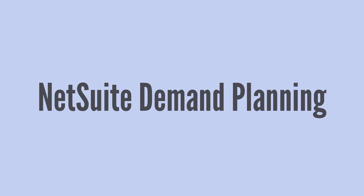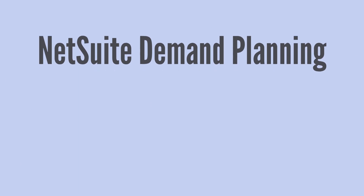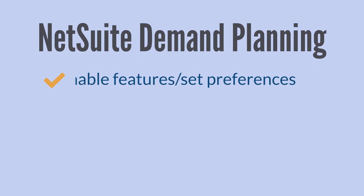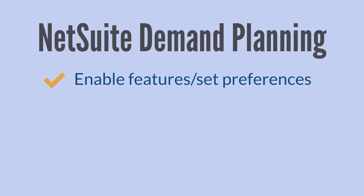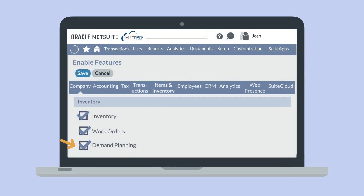As with most NetSuite functionality, setting up demand planning requires enabling some features and setting some preferences. In Enable Features, you can find the Demand Planning feature under the Inventory section of the Items and Inventory tab. And if you use Assembly Items, then you will also need to enable the Work Orders feature in order to use demand planning with any of your Assembly items.